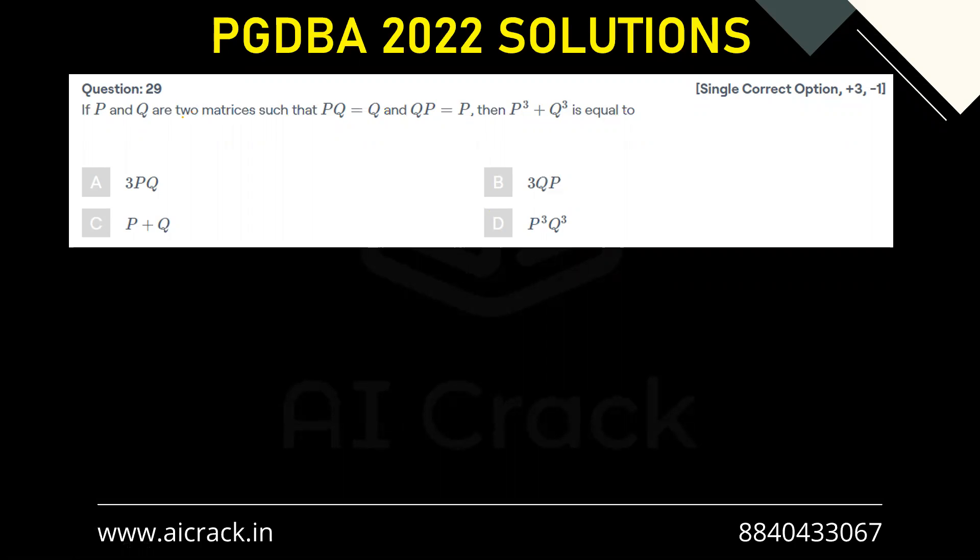Hi everyone, let's solve question number 29. If P and Q are two matrices such that PQ equals Q and QP equals P, then P cubed plus Q cubed is equal to? In such questions, we tend to modify the given expression rather than using algebraic identities, because that might not work in case of matrices.